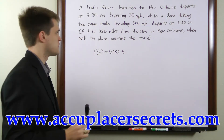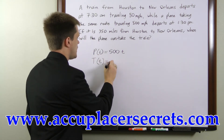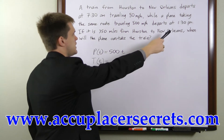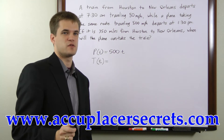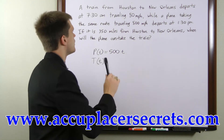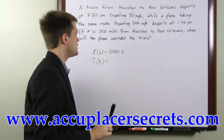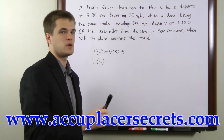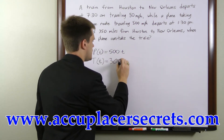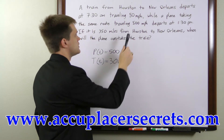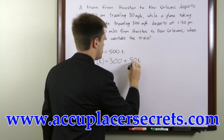To find the position of the train, we have to do a little back-checking. At 1:30 p.m., the train, which departed at 7:30 a.m., has already been traveling for six hours. At 50 miles an hour, that means it's already gone 300 miles. So we start it at 300 miles plus 50 times t.